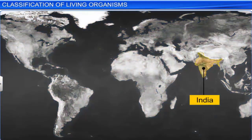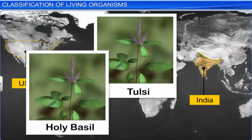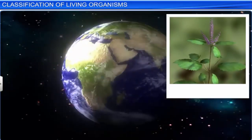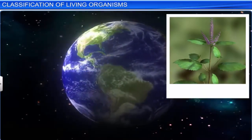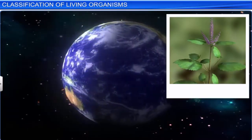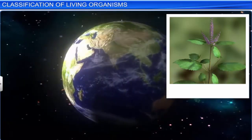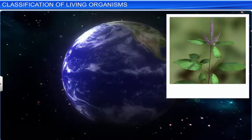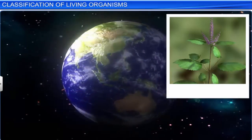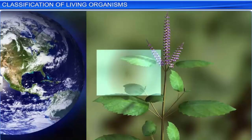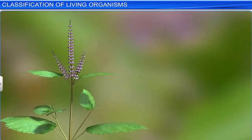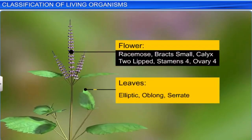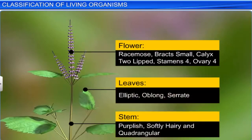It is common to find living organisms being known by different local names in different parts of the world. To avoid this confusion, the name of a living organism must be standardized such that it is known by the same name the world over. This process is known as nomenclature. However, to name an organism, we need to know its correct description and to what organism the name is attached to. This is known as identification.